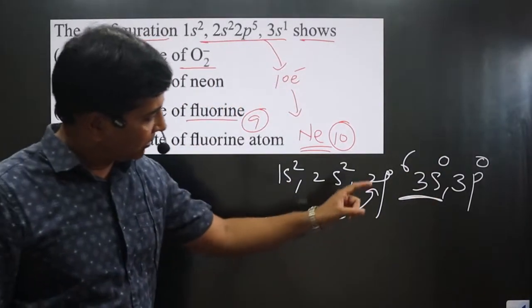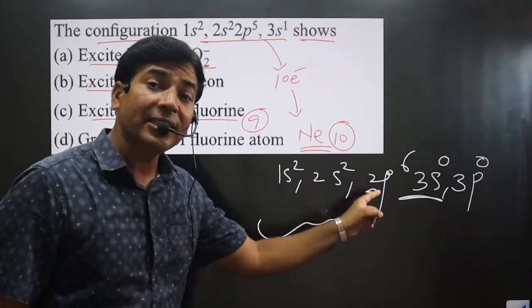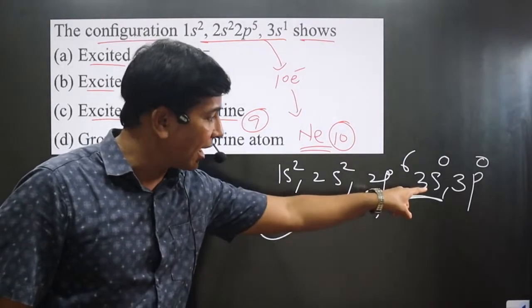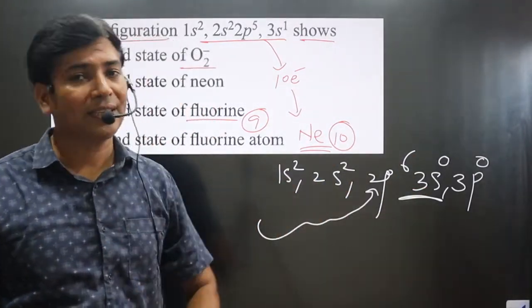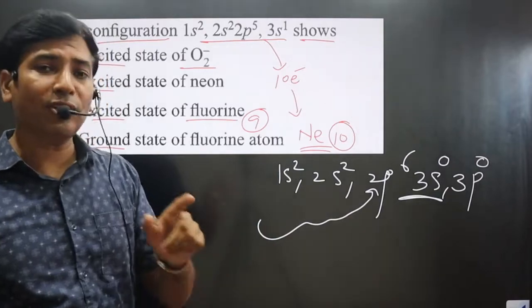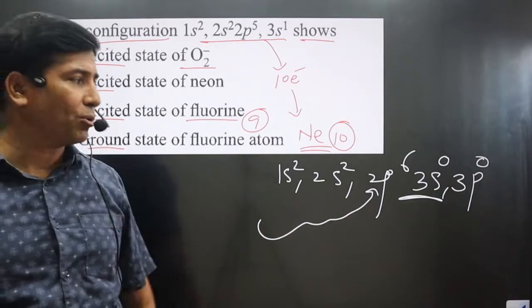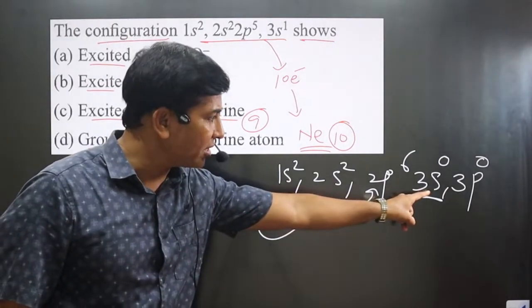The lower orbit has lower energy and this has higher energy. You can compare the energy by using the n plus l value rule - it has higher n+l value versus lower n+l value.